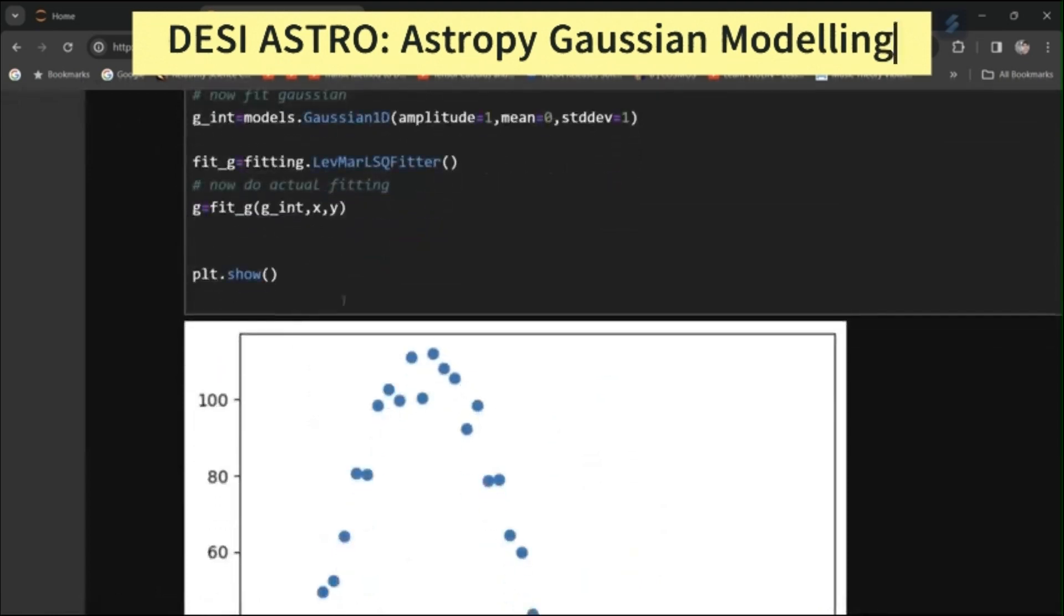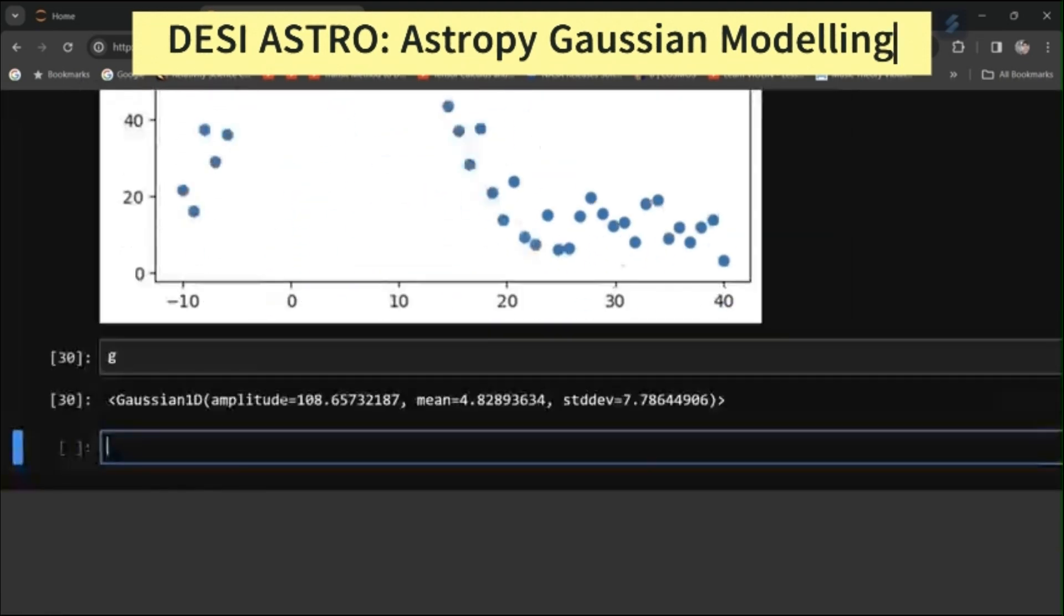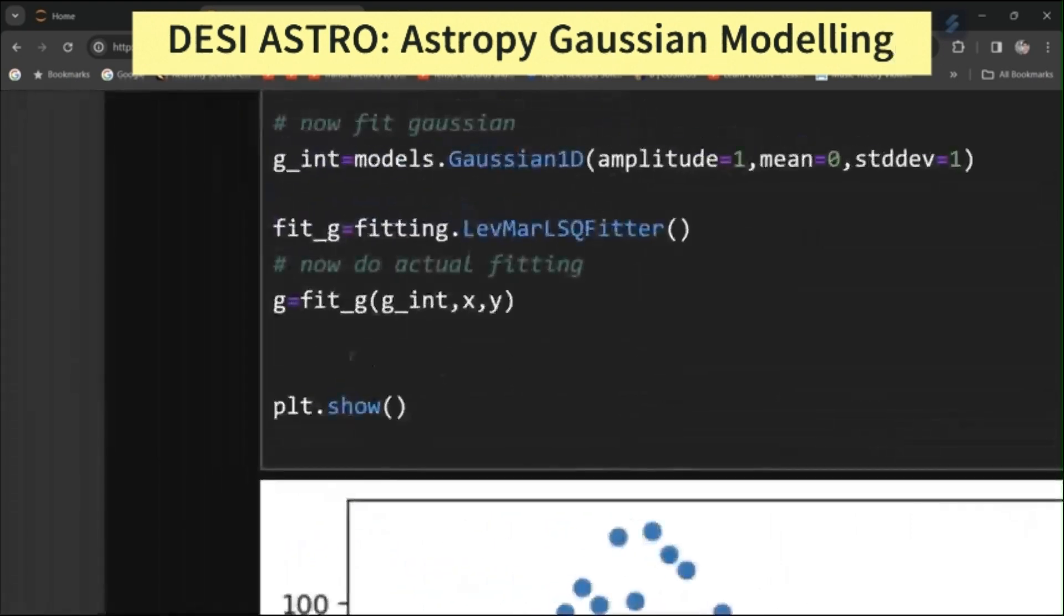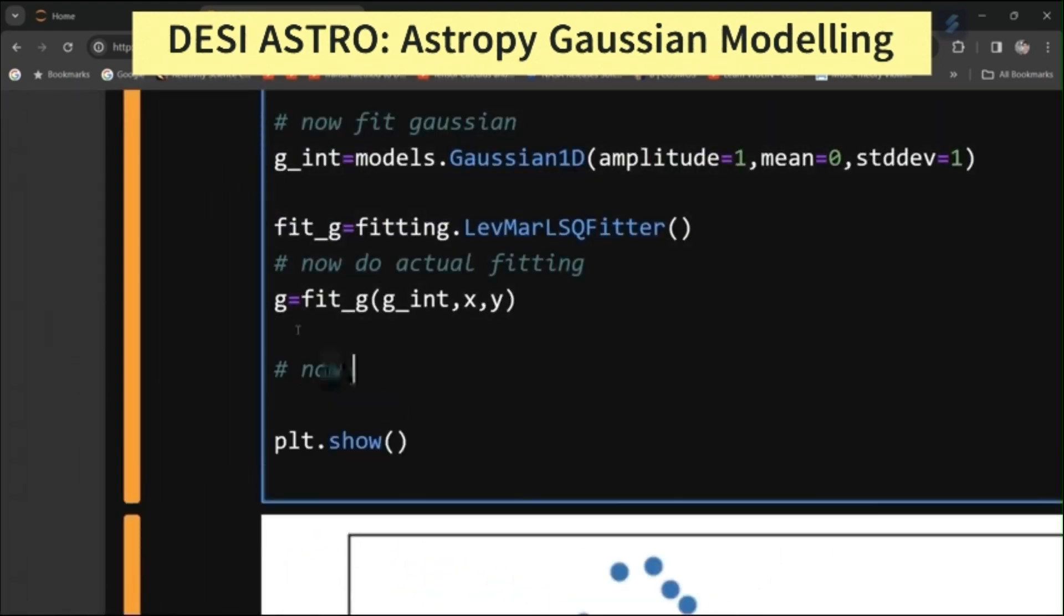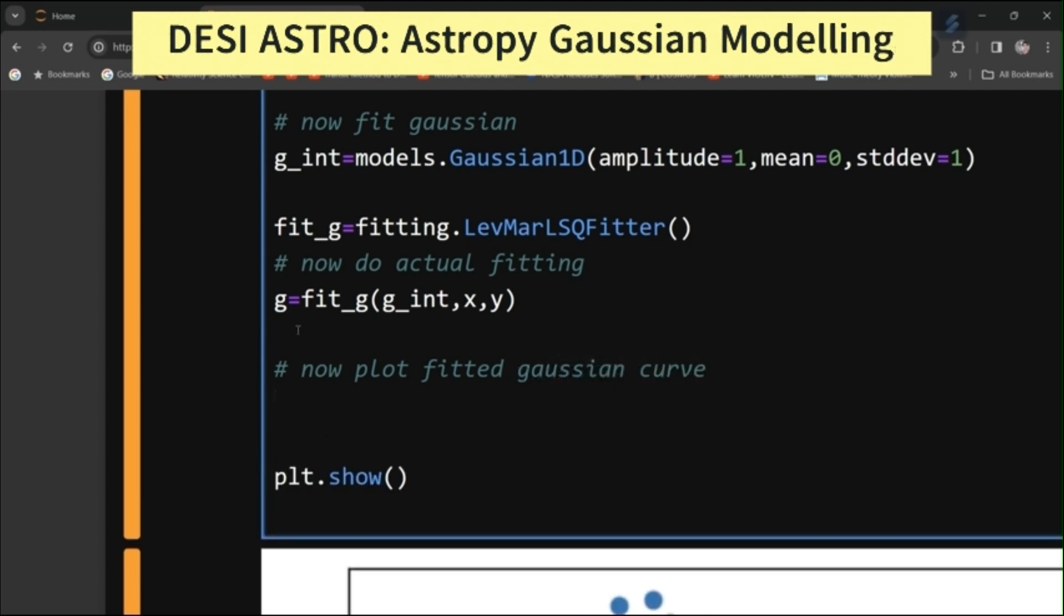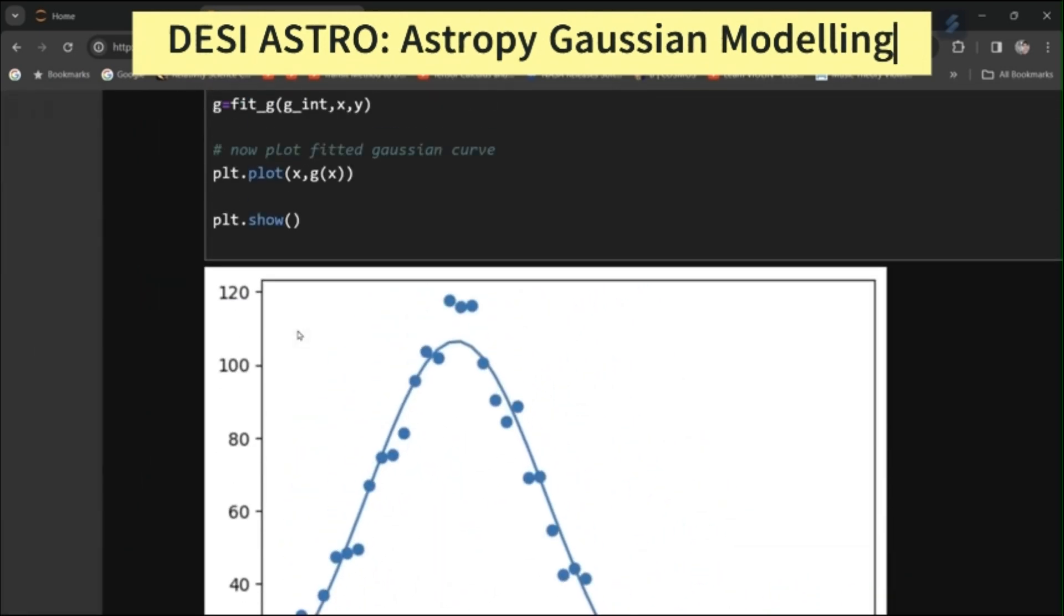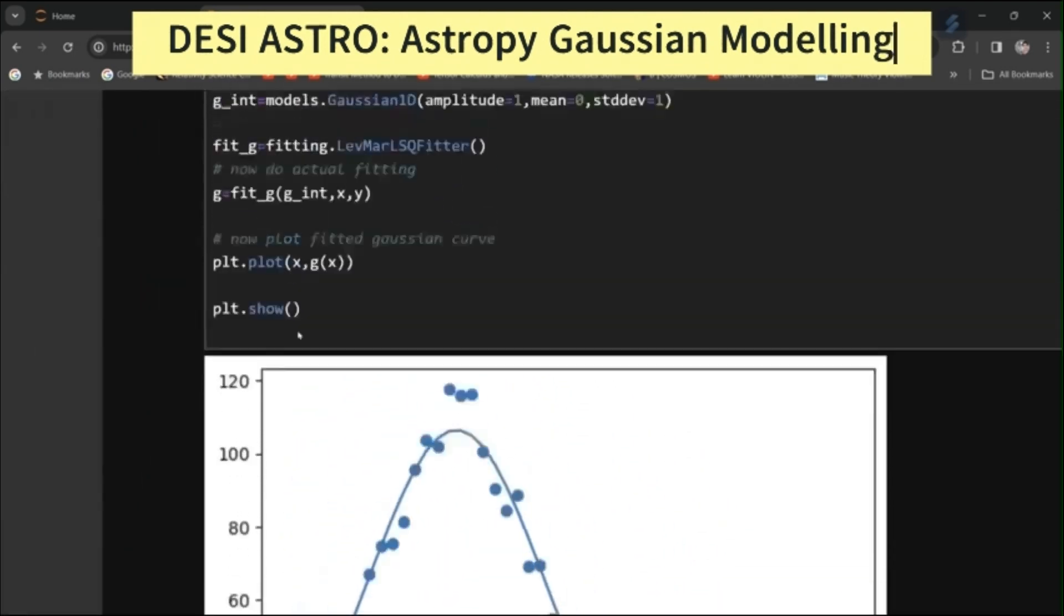You can see g has given these parameters. I will plot these parameters along with that. Now plot fitted Gaussian curve. For that, type here plt.plot your x and then g of x. So here you can see that you have fitted your Gaussian to the plot.